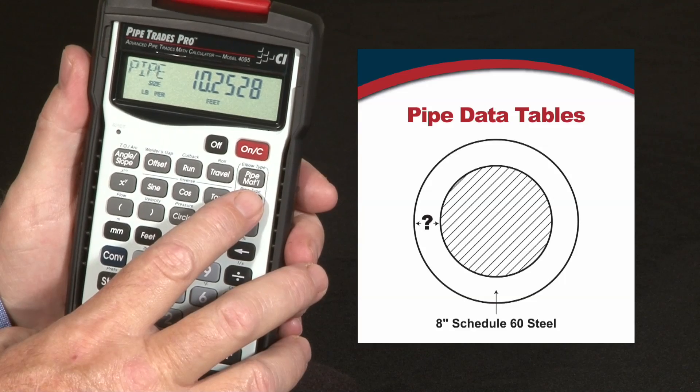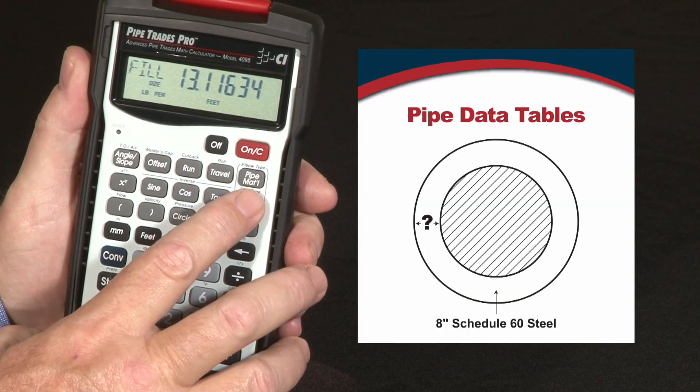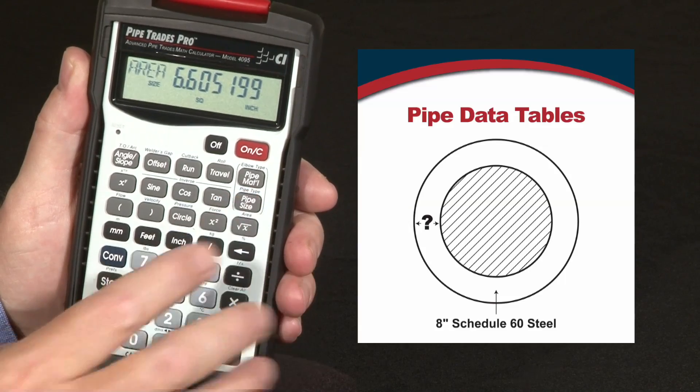It also shows the pipe weight in pounds per foot, the fill weight, and the area of the inside of the pipe.